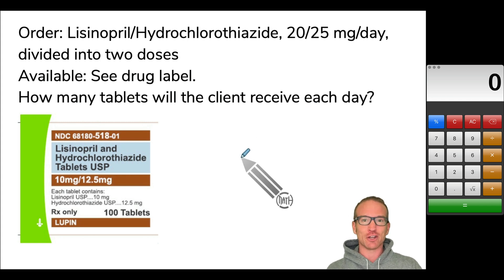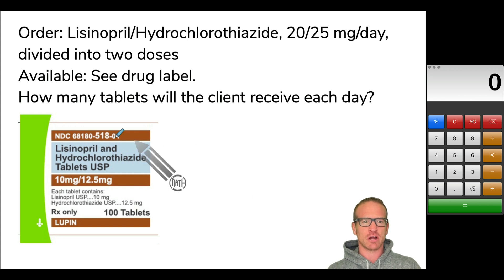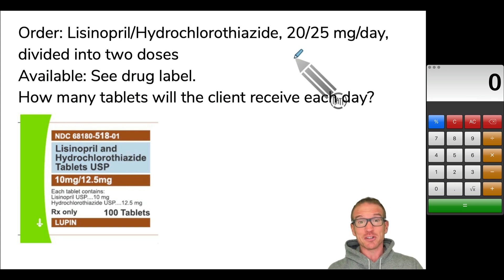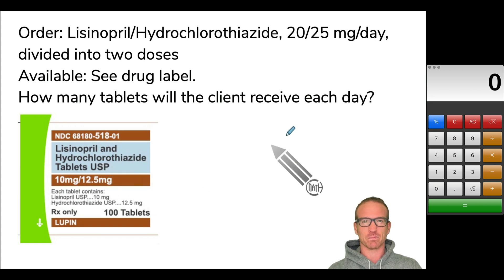Desired over have works just fine here. If you've been following my videos, you know I'm a huge fan of dimensional analysis, but the focus of this video is talking about two medications on a single drug label. So I'm going to use desired over have. Very rare that I do formulas, but again, the focus is on these two medications on one drug label.